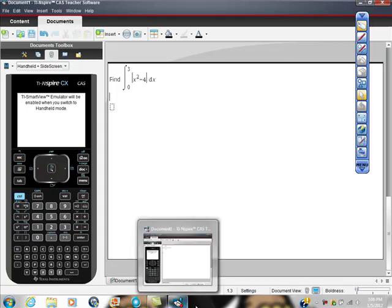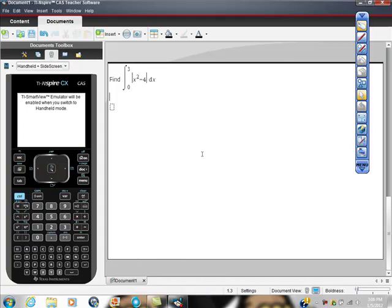Okay, so here we're going to use our TI-Inspire CX CAS to find the definite integral from 0 to 3 of the absolute value of x squared minus 4 dx.